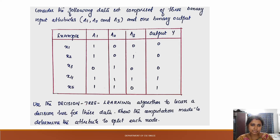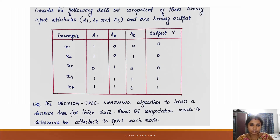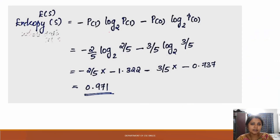This example involves the most important concept: entropy. The entropy equation involves a probability term. This is positive — this is the output. Probability of 1 into log to the base 2 of probability of 1, at the same time minus probability of 0 — that is the probability of the output being 0.